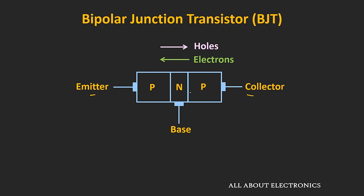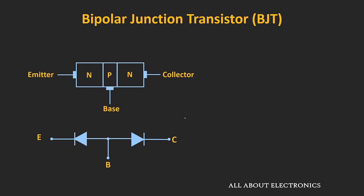If you look inside the BJT, there are two PN junctions — one between the emitter and the base, and the second between the base and the collector. It appears as if two back-to-back diodes are connected in series. But actually, it won't behave like that, because when we connect two back-to-back diodes, we are assuming there is no interaction between the two diodes — that they are operating independently.